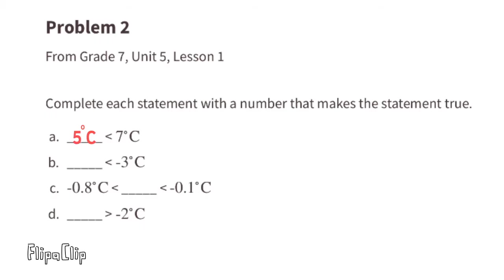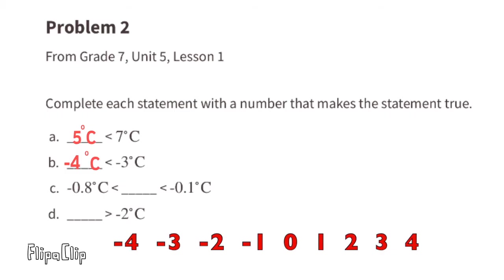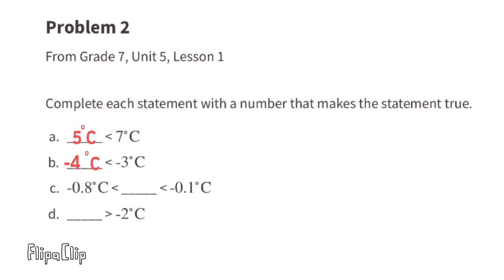Negative 4 is to the left of negative 3 on the number line, so negative 4 is less than negative 3. We can put: 'negative 4 degrees Celsius is less than negative 3 degrees Celsius.' Part c: we need to find a temperature greater than negative 0.8 degrees Celsius and less than negative 0.1 degrees Celsius.